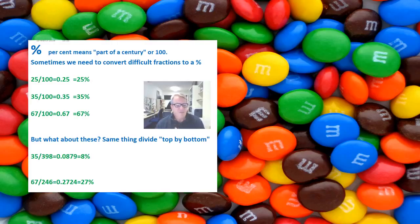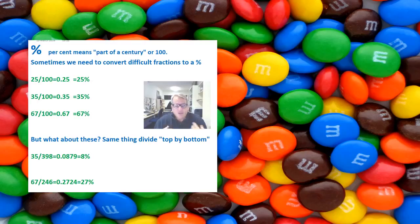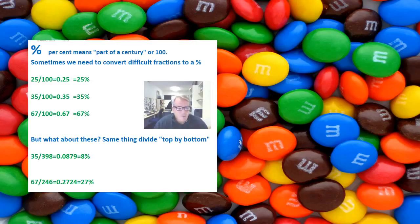But it's not as simple as that. Your packet might have 398 or it might have 246. Same rule applies: divide the top by the bottom. So 35 divided by 398 equals 0.08 — we're only interested in the first two decimal places, which are hundredths — so that answer is 8%. 67 divided by 246 equals 0.27; 27 hundredths equals 27%. That's how simple it is.